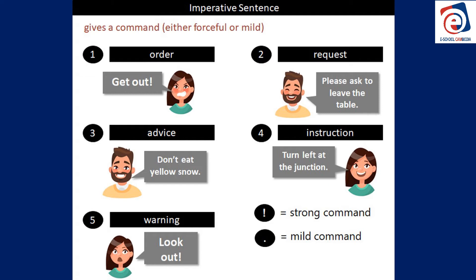Number four is instruction. For example: 'Turn left at the junction' or 'Write down what I tell you,' 'Record your voice and send it to me,' 'Listen to the video many times until you can speak fluently, then record your voice and send it to me.' That is an imperative sentence — I'm not asking you to do it, I'm not giving you information, I'm telling you to do it as your teacher. But it's an instruction.